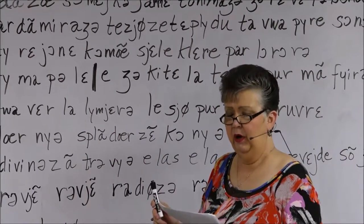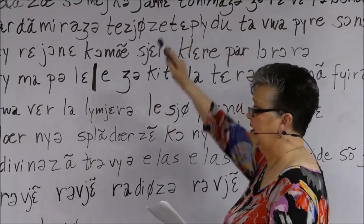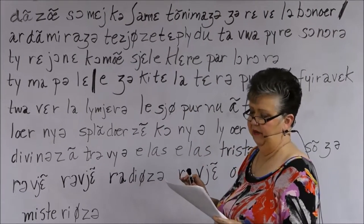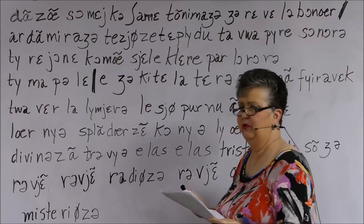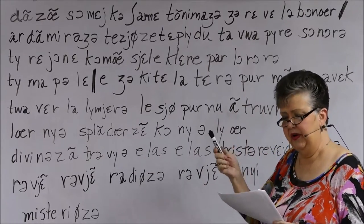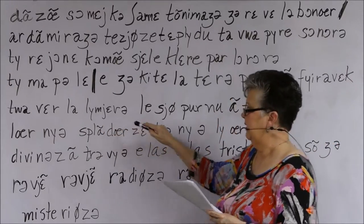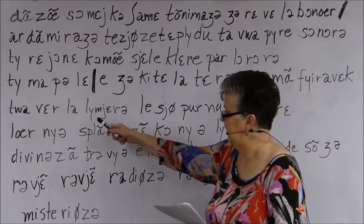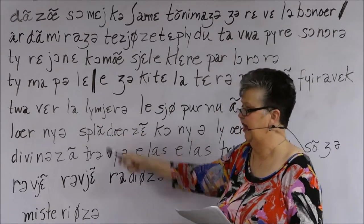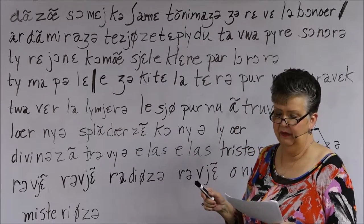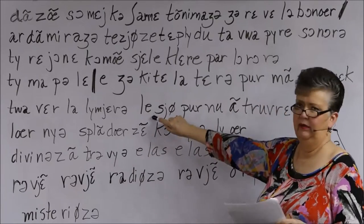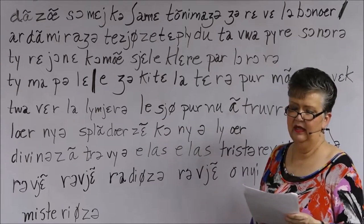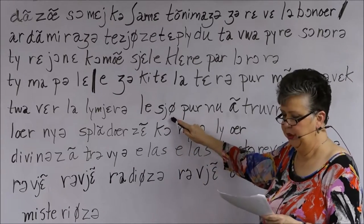Turning the page: T-O-I gives [twa], V-E-R with S silent for 'vers.' Then 'la lumière': L-apostrophe gives the French U. The next syllable M-I-E with the grave accent (accent grave) equals the open [ɛ] sound — as opposed to the closed [e] of the acute accent. The I-E glides, so we get 'lumière.'